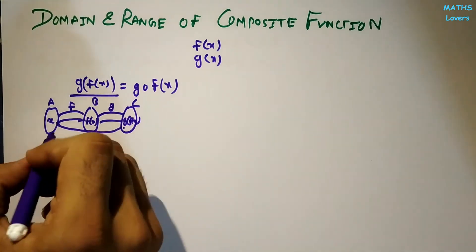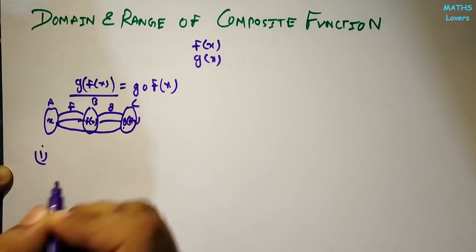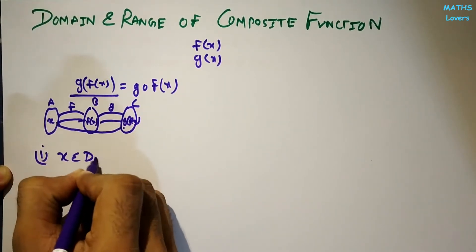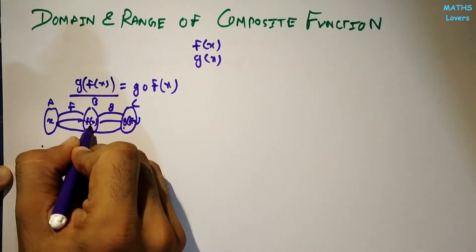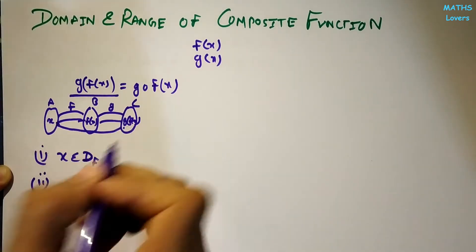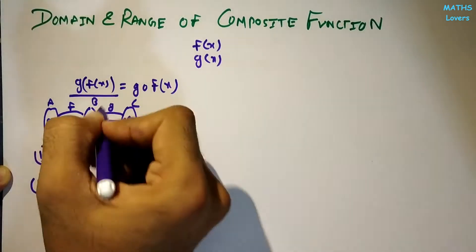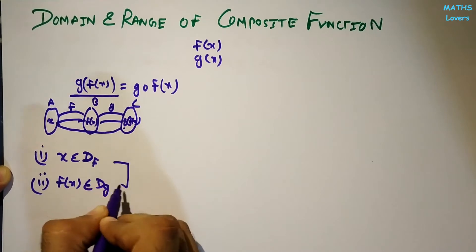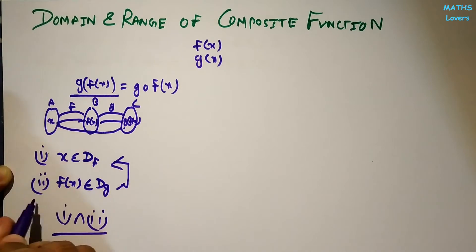To find the domain of g∘f, we need two conditions: first, x should belong to the domain of f; and second, f(x) should belong to the domain of g. Both conditions must be satisfied, so we take the intersection of both. We find each condition separately and then take the intersection.